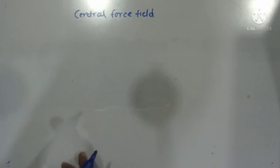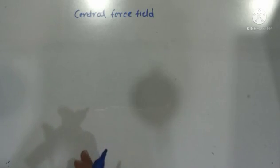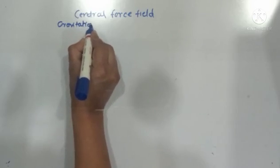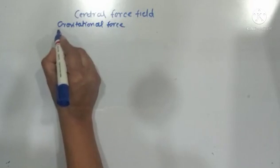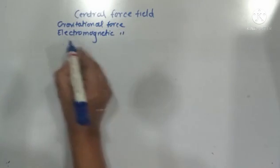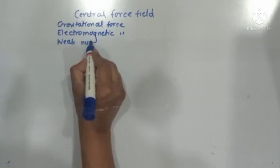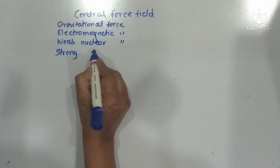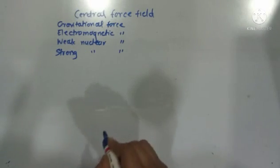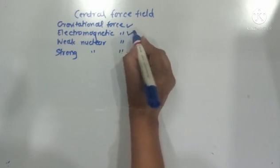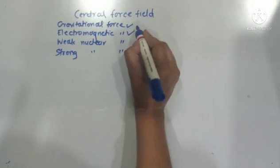Today we are going to learn about the central force field in physics. There are four main types of forces we generally deal with: gravitational force, electromagnetic force, weak nuclear force, and strong nuclear force. Out of these four forces, gravitational force and electromagnetic electrostatic force are the central forces.